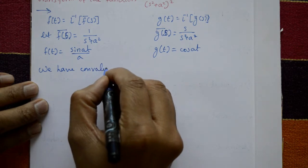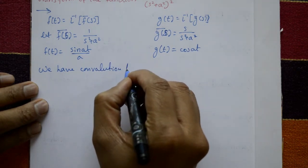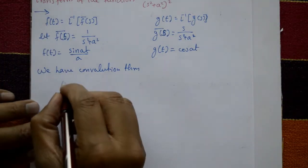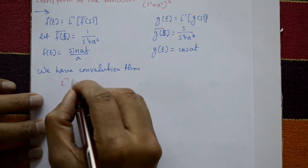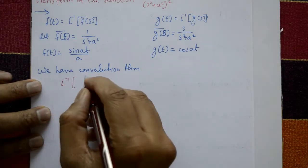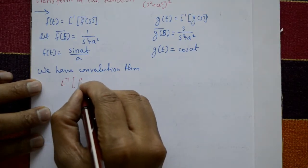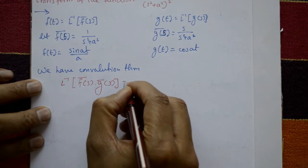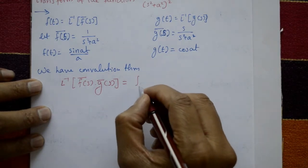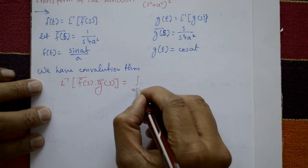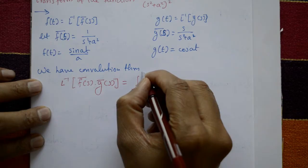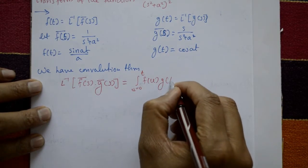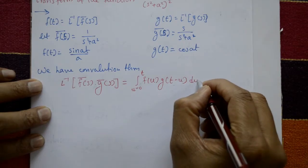Convolution theorem: the inverse Laplace transform of F̄(s)·Ḡ(s) is equal to the integral from u=0 to t of f(u)·g(t−u) with respect to u.